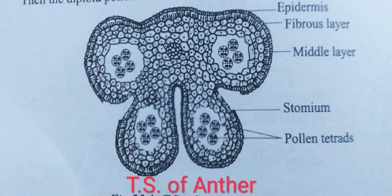The anther wall is formed of four layers, namely epidermis, endothecium, middle layer, and tapetum. First, the epidermis is the outermost layer of the anther. It consists of a single layer of compactly arranged cells. It exists at a very early stage and is not derived from the primary parietal cells. In matured anther, the cells of the epidermis are greatly stretched and flattened.